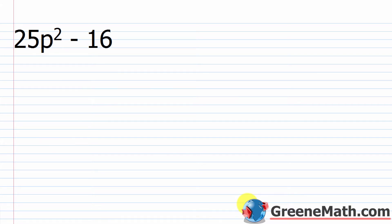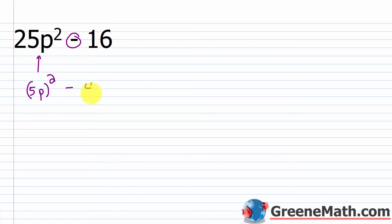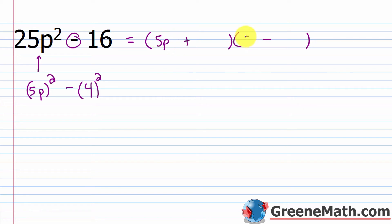Next: 25p squared minus 16. Two terms, minus sign — difference of two squares. Is 25 a perfect square? Yes, it's 5 squared. p squared is a perfect square. So write this as 5p, that quantity squared. Is 16 a perfect square? Yes, it's 4 squared. Set up your parentheses with a plus and a minus, put 5p in the first position of each and 4 in the second position. This factors into the quantity 5p plus 4 times the quantity 5p minus 4.